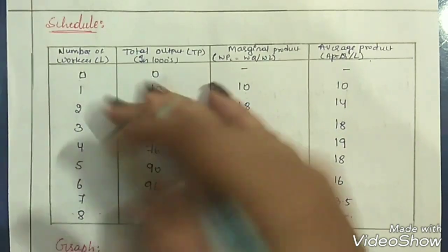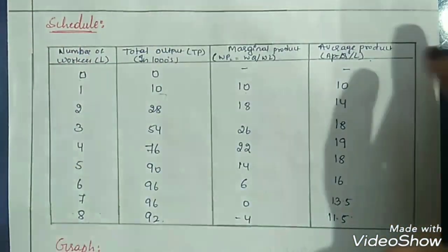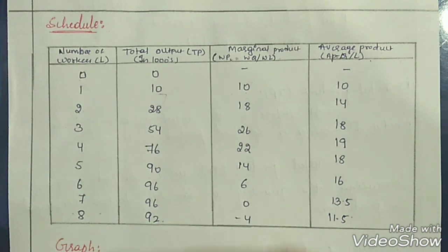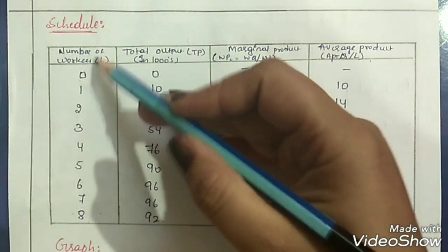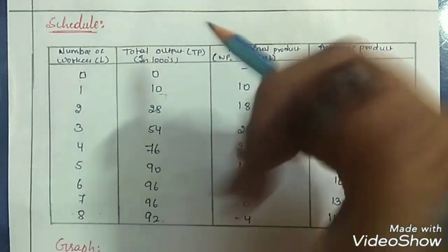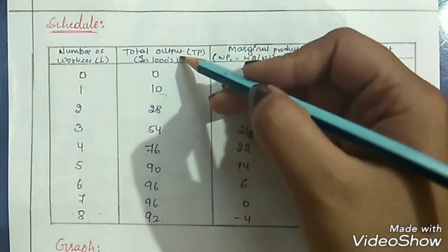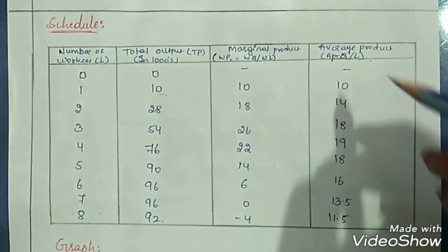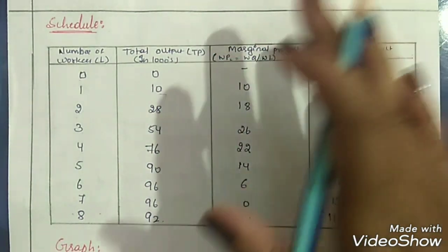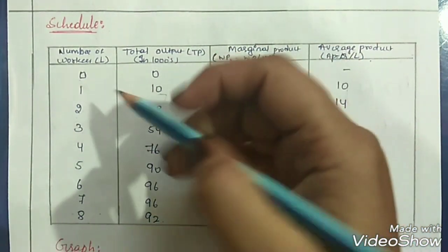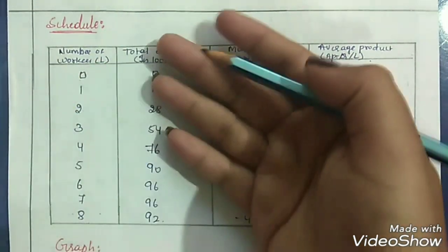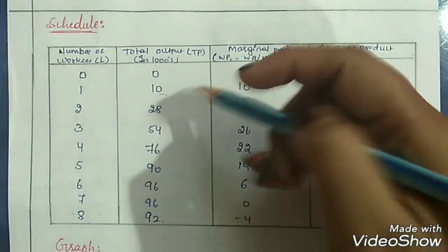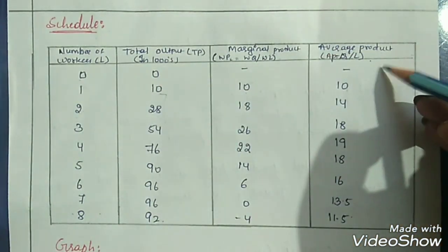Now let's look at a schedule to make our concepts very clear. The schedule shows number of workers used for production, total output or total product, marginal product, and average product. When no production activities are carried on, all of TP, MP, and AP remain 0.